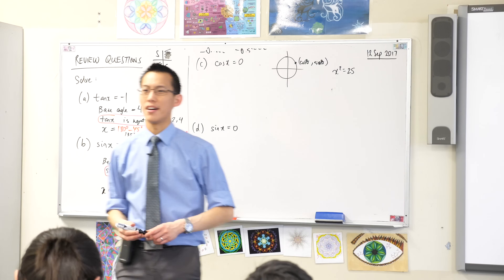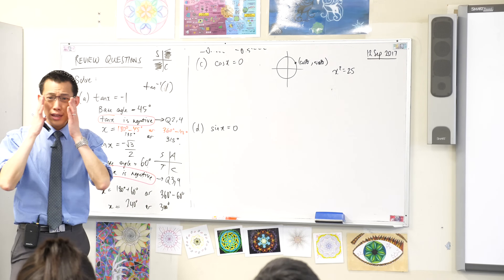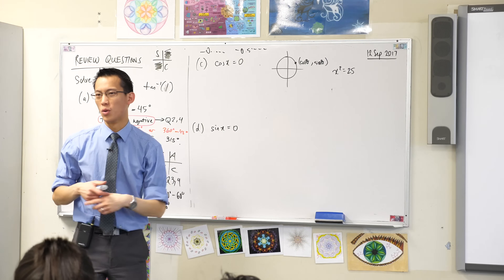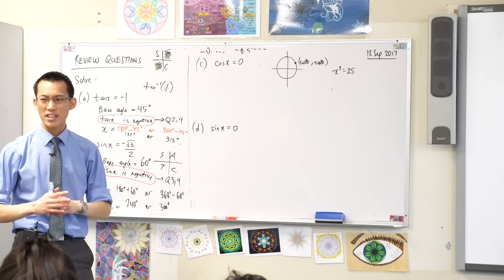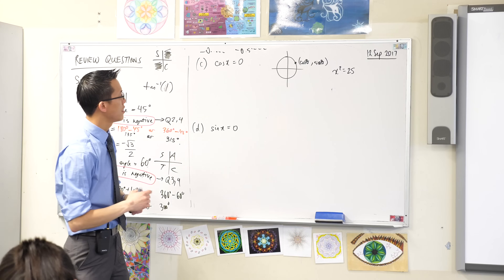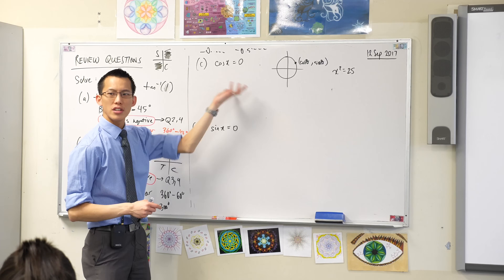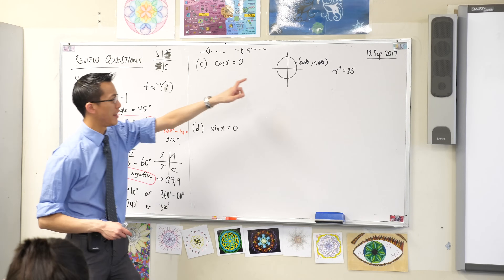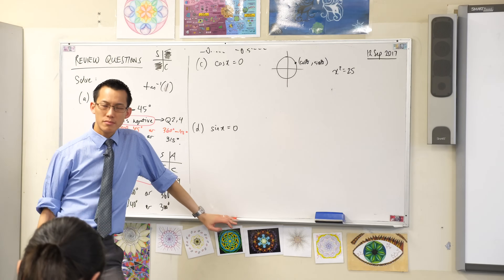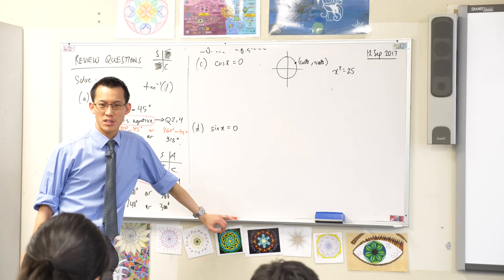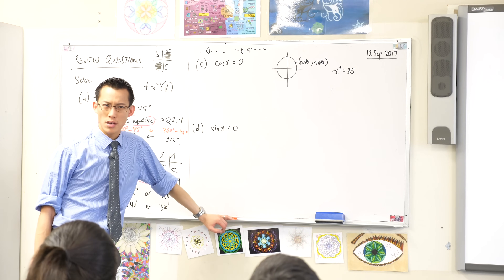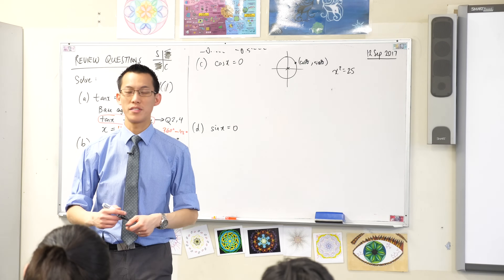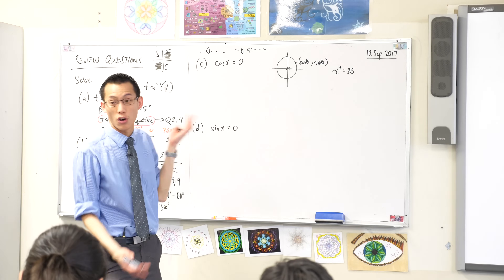Does that make sense? Let's do part C first. If cos is the x-coordinate, that's about horizontal. So where on the unit circle has an x-coordinate of 0? The origin is (0, 0) — it has an x-coordinate of 0 — but the problem is it's actually not on the circle. I'm looking for spots on the circumference.